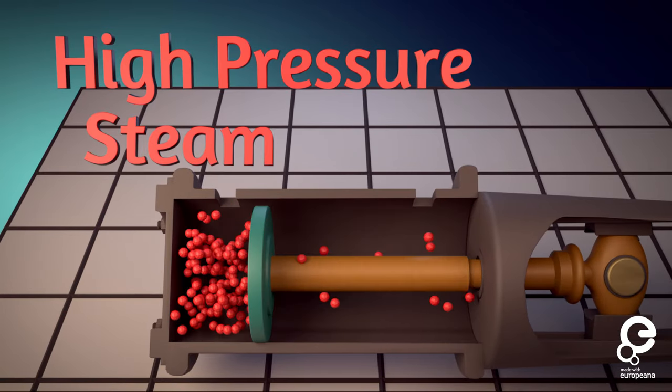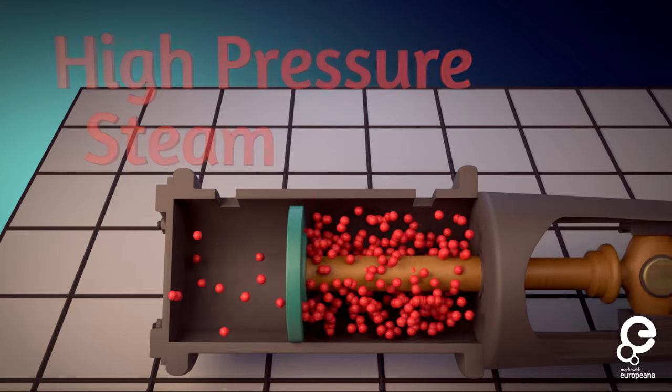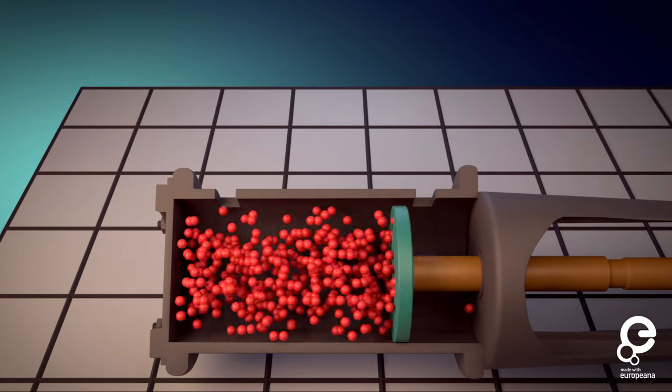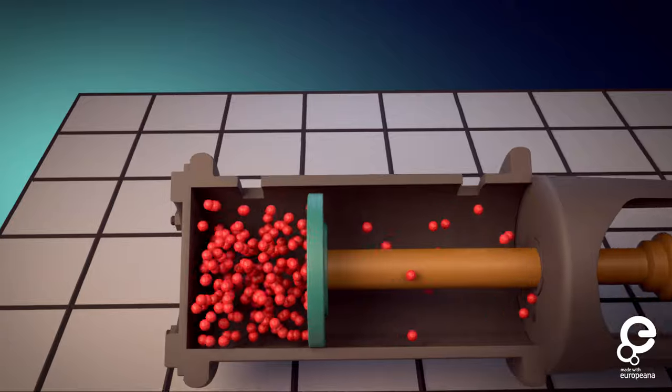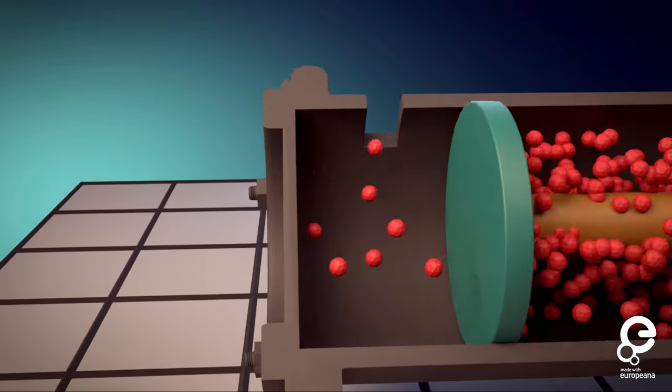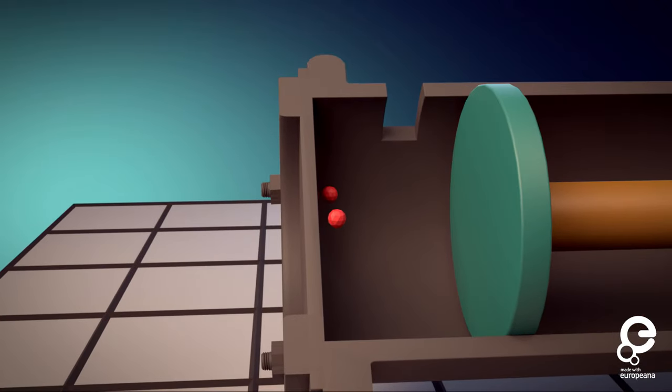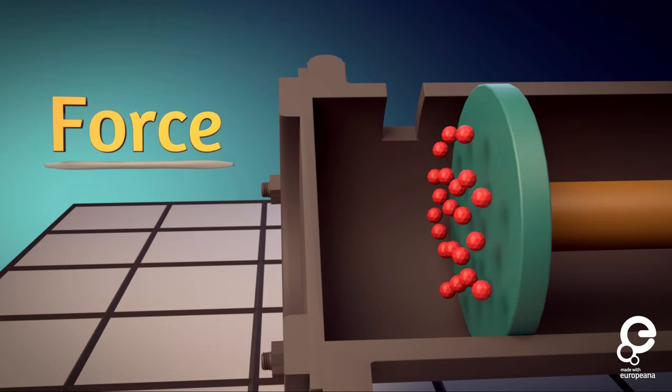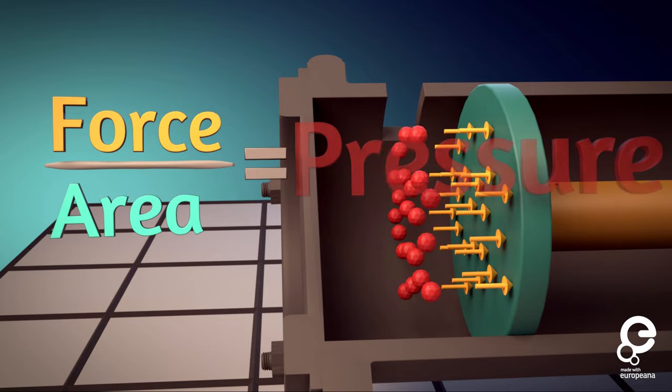Here we have a piston that moves back and forth in a cylinder, with one side connected to a tank of boiling water and steam, while the other is open to the atmosphere. As the steam molecules bounce off the metal piston, they impart a small force. The sum of the forces of all the molecules divided by the area is called pressure.